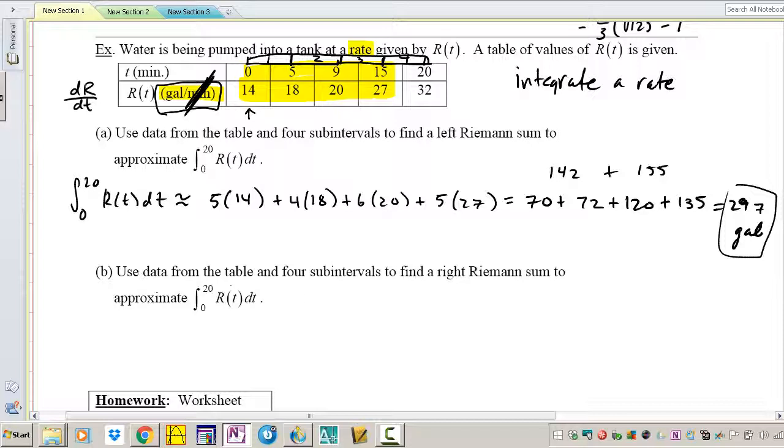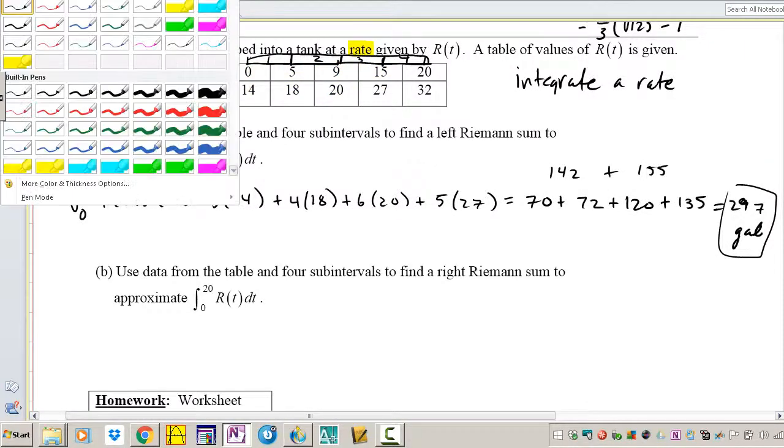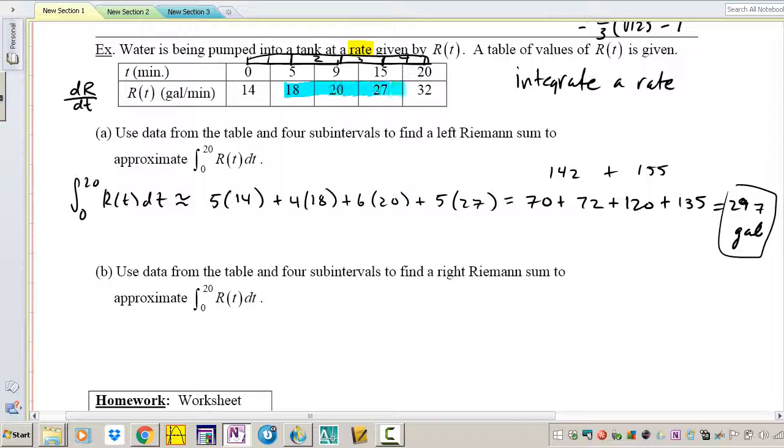Use the data from the table. Okay, we're doing right Riemann sum now. So right Riemann sum is no longer the first points, it's going to be the last point. So in blue we're doing the last points, so it's going to be the same bases really, just different heights, and we're going to compare the areas.